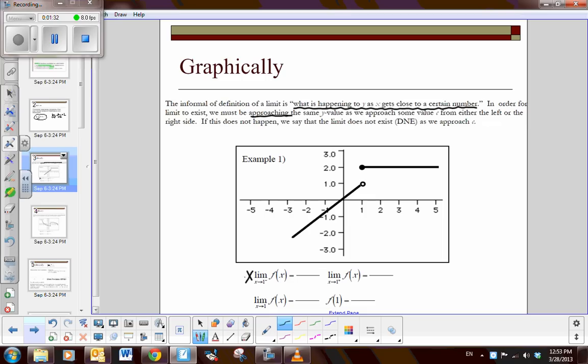So first of all, as I approach 1 from the left, coming from the left, what is the y value? We can see the y value is 1. As I approach 1 from the right, what is the y value? The y value is 2. So what is the limit as I approach 1 from the left and the right? Well, you notice they're different values, so therefore the limit does not exist.